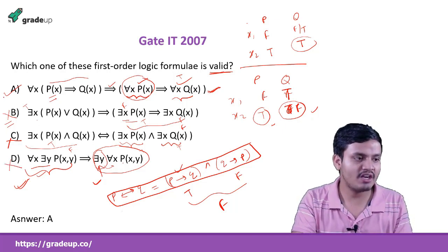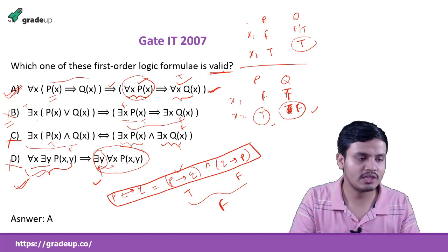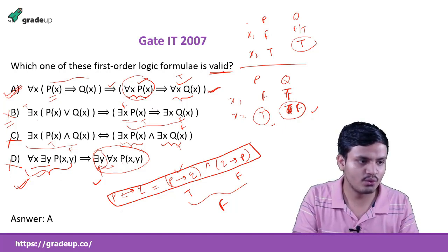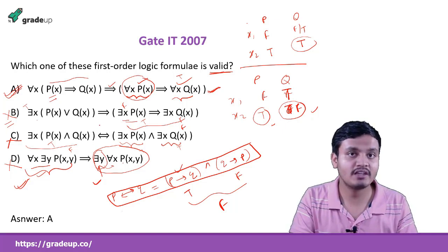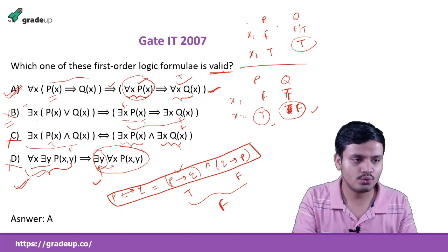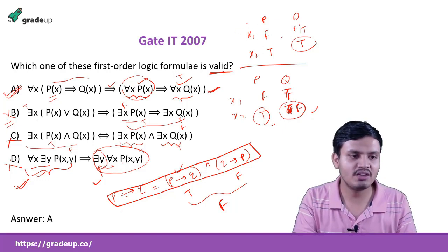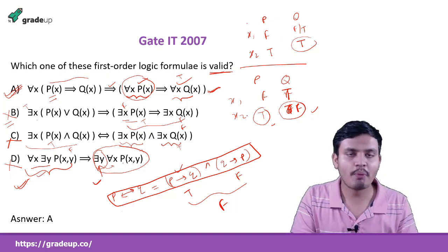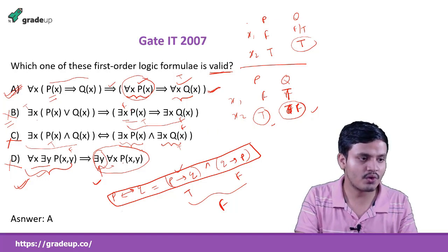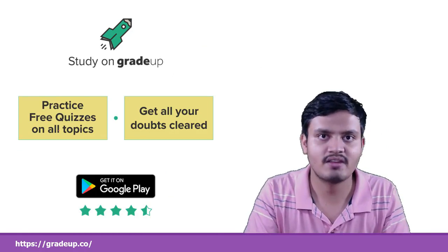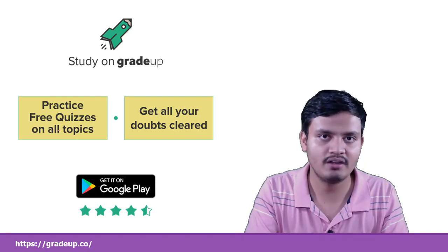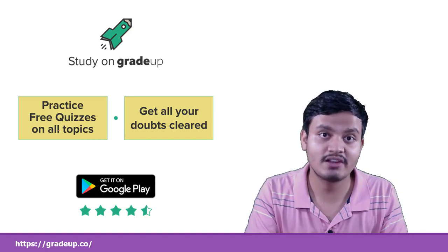So the only valid option was A. There are various ways to approach such questions: try to assign the antecedent as true and conclusion as false to disprove validity, or use a small restricted domain. Practice these methods as much as possible. That's all from propositional logic — the more you practice, the more confident you become. It is a very important topic, so don't leave it. Thank you.